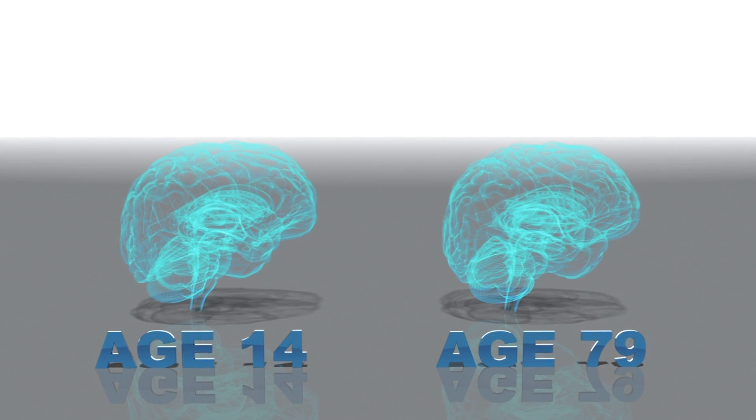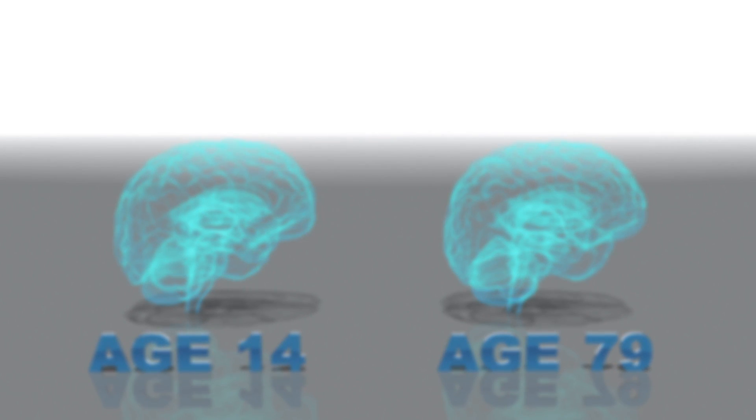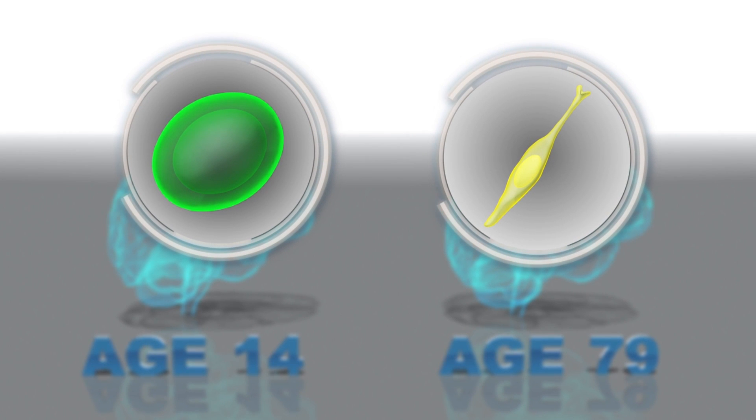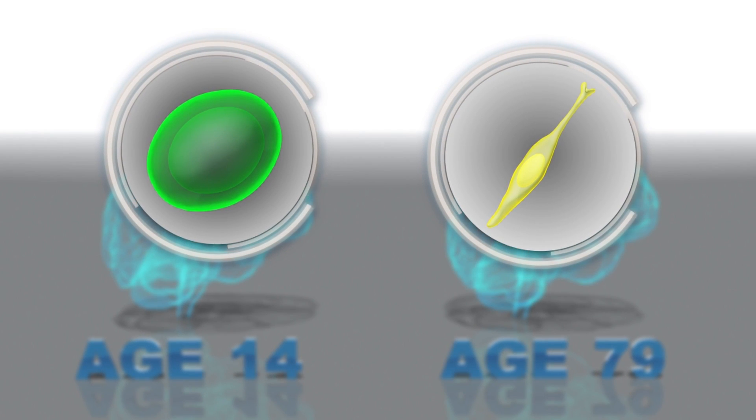Researchers found similar numbers of neural progenitor cells and immature neurons, regardless of age. This led them to conclude the human brain can produce neurons even in old age.